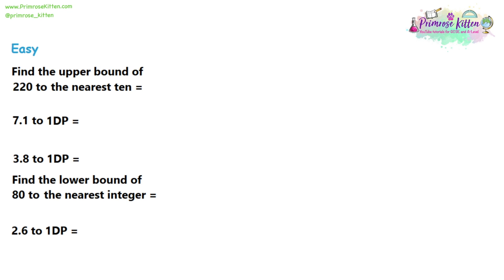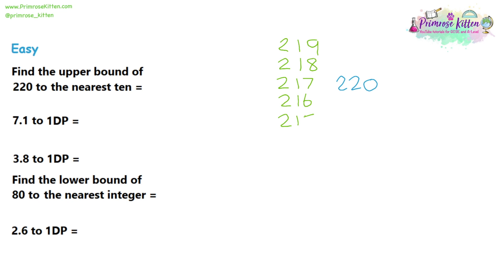Okay, so we're going to have a look at bounds. Bounds are basically the opposite of rounding. So let's look at the first question. We want to find the upper bound of 220. I'm going to start looking at numbers that round up to 220. So for example 219 would round up to 220, 218 would round up to 220, 217, 216, 215 would all round up to 220.